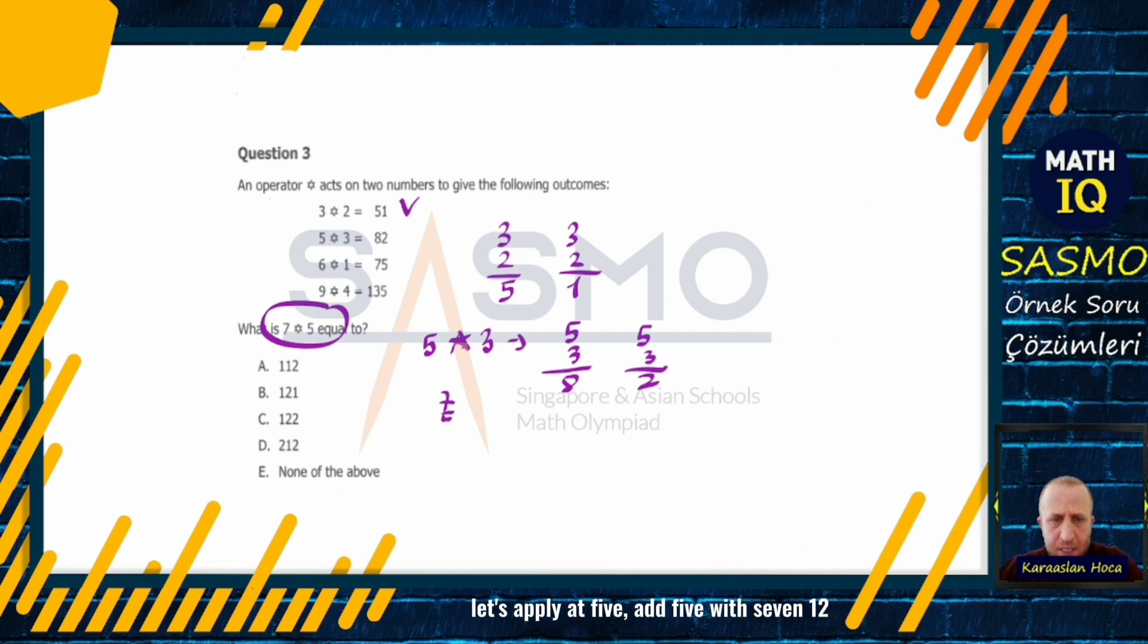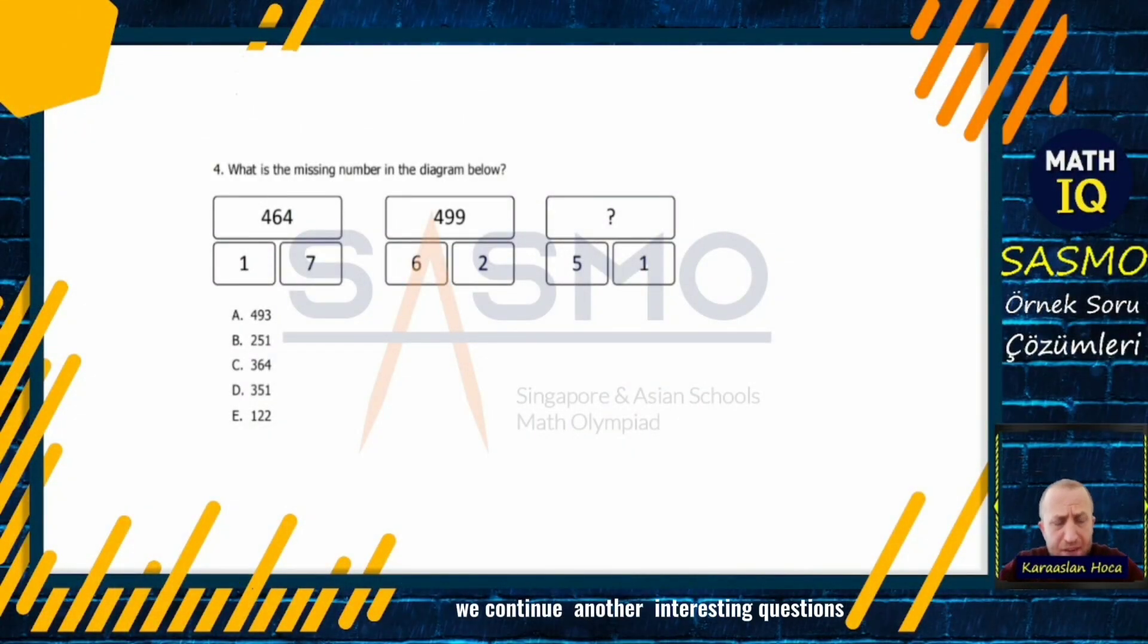Let's apply at 5. At 5 with 7, 12. Subtract 5 from 7, 2. The answer we are looking for is 122. We continue another interesting question. There is something like this here guys. Watch out for 6, 4. We will make 464 from 1 and 7. So we'll use 1 and 7.